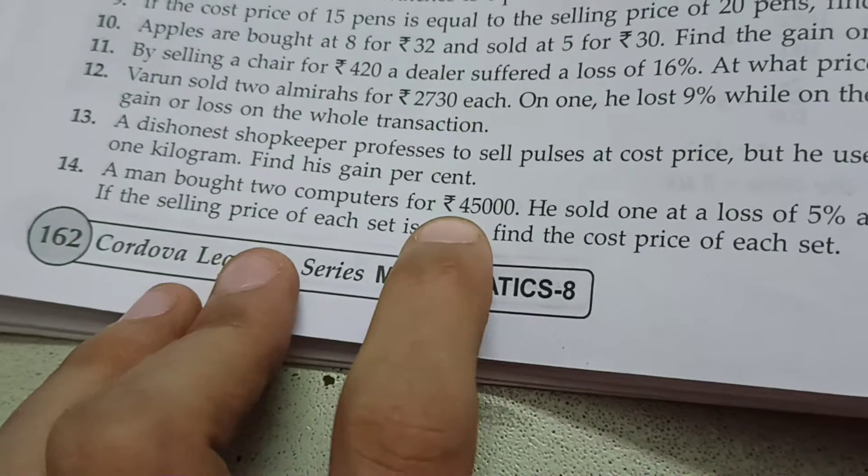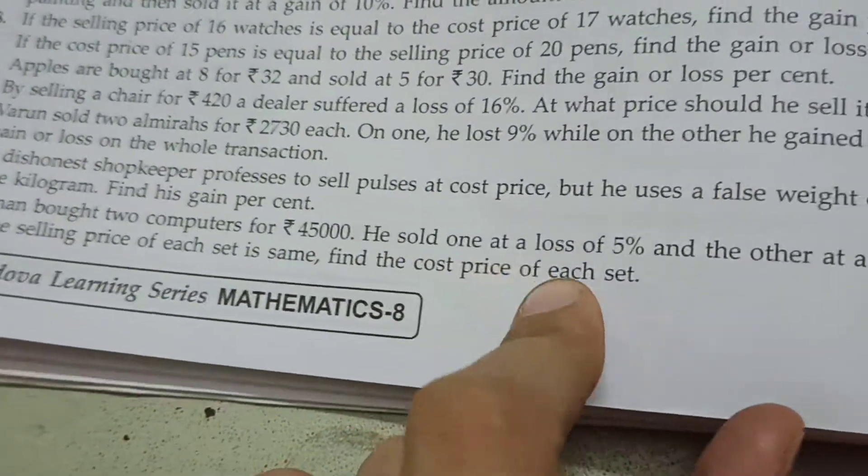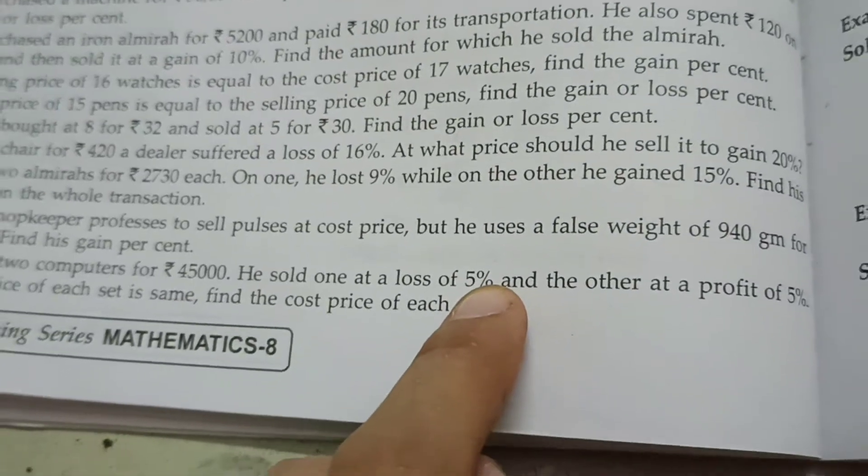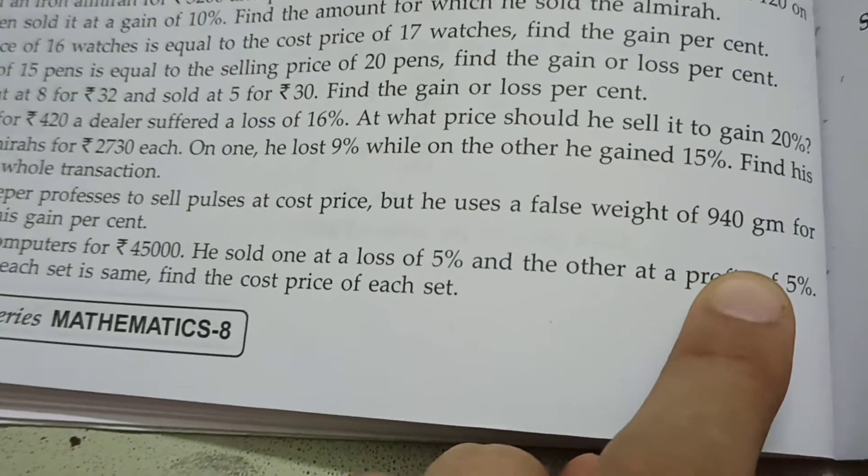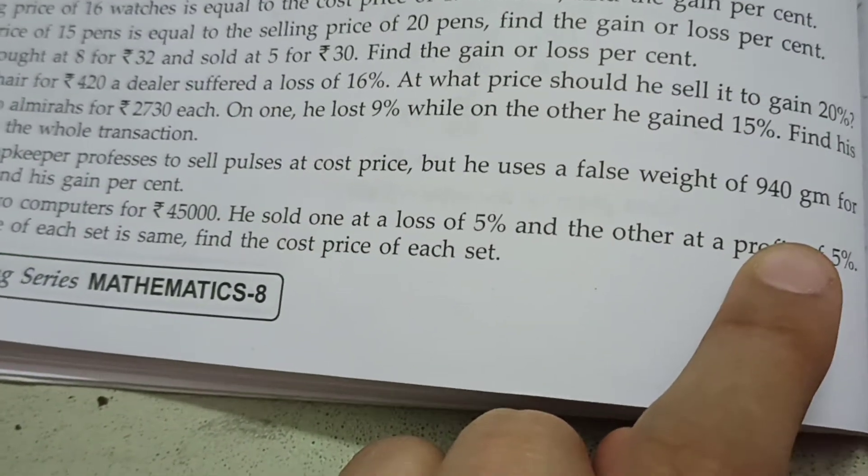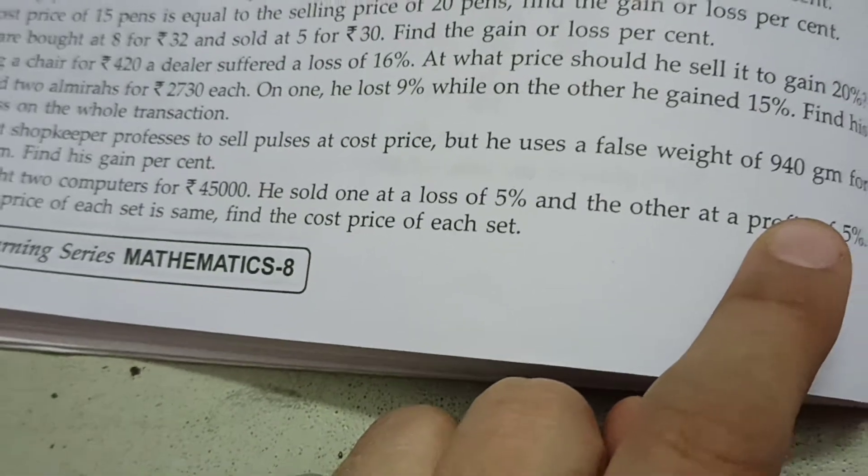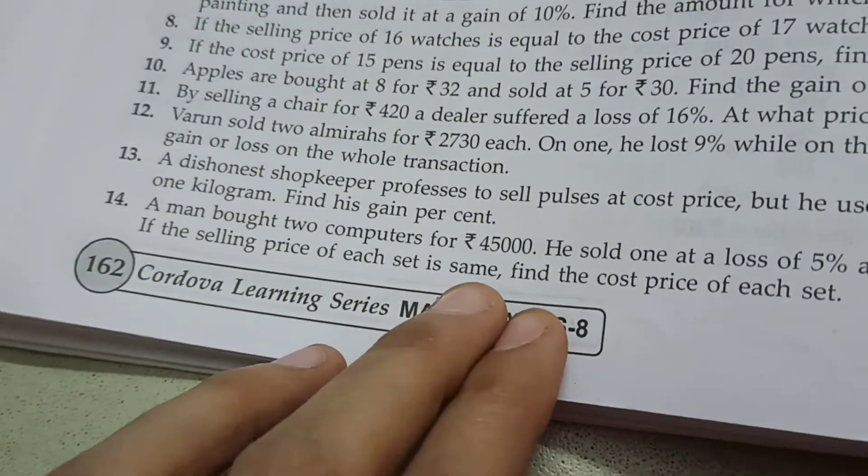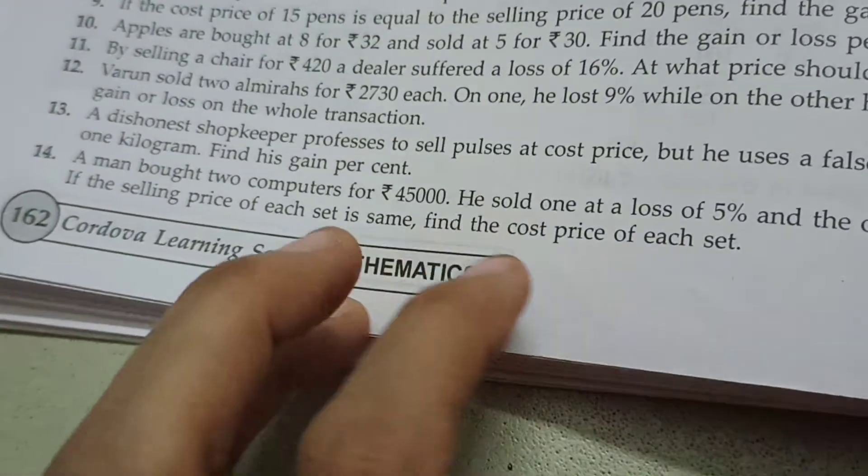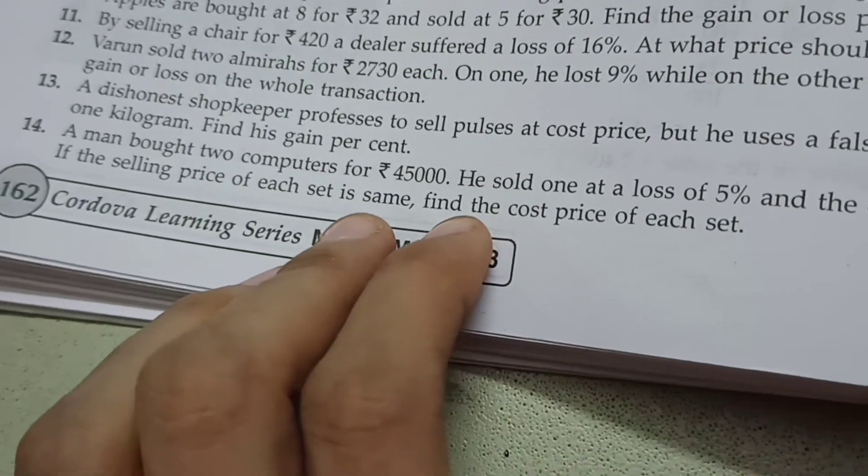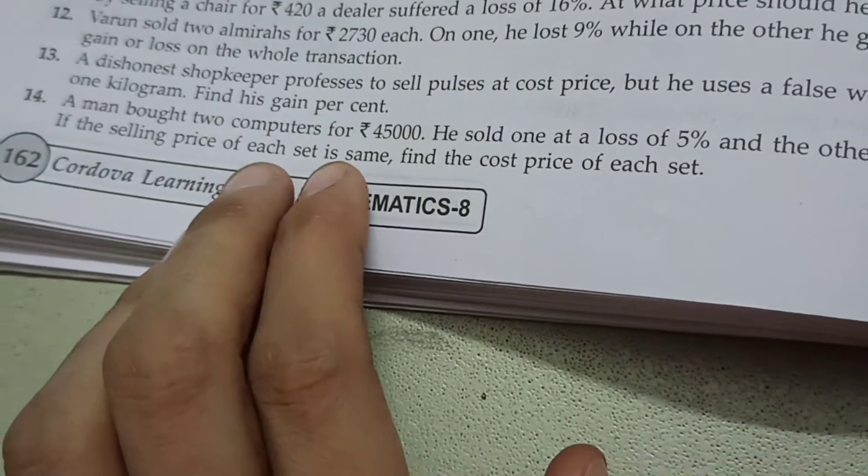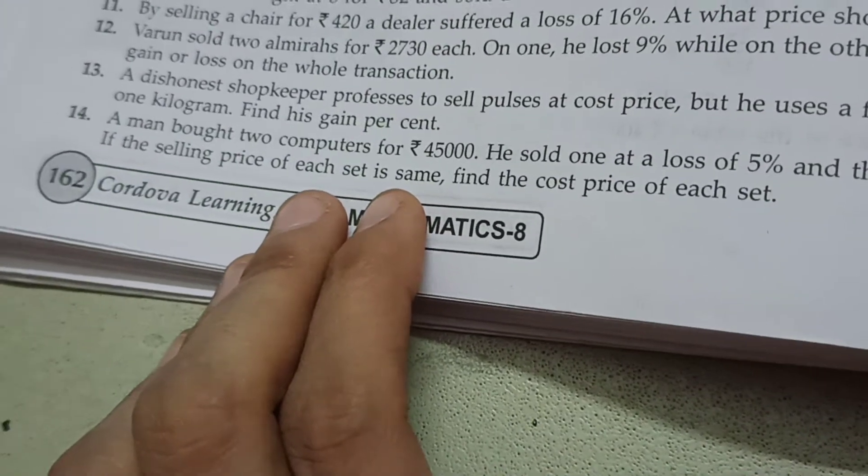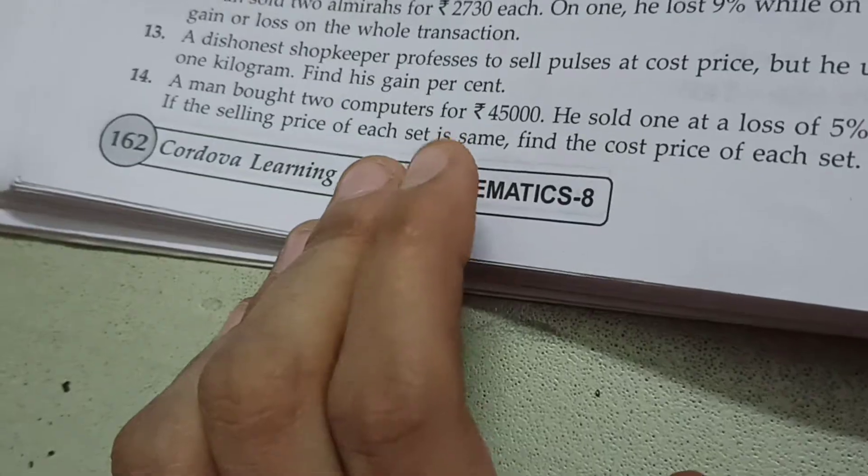A man bought two computers for rupees 45,000. He sold one at a loss of 5 percentage and other at a profit of 5 percentage. If the selling price of each set is same, find the cost price of each set. CP of two computers is given, but SP is same for both. Let the selling price be X.